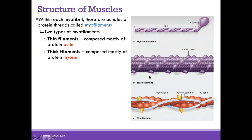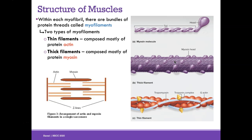Myosin molecules arrange themselves in thick filaments, with multiple myosin heads protruding — unlike kinesin or dynein. We have thick filaments of myosin and thin filaments of actin, arranged so that actin is on either side of myosin, slightly overlapping. When muscles contract, the actin and myosin fully overlap.